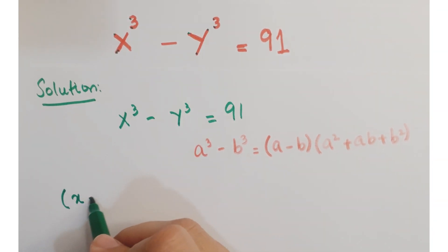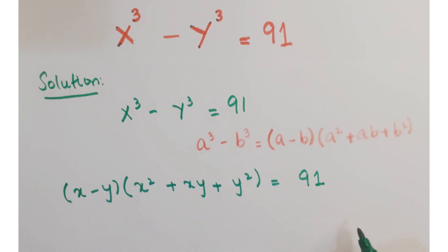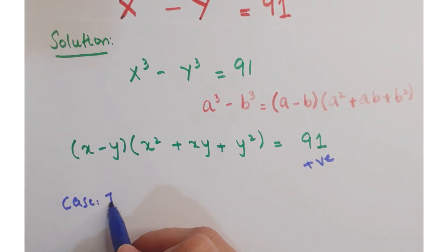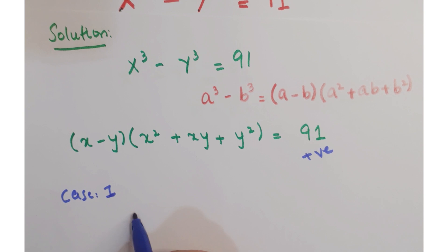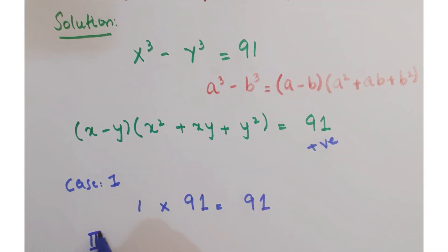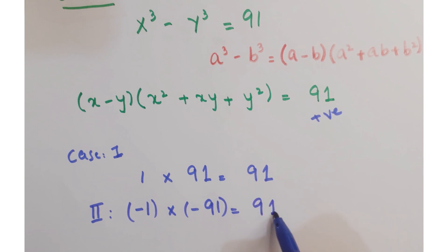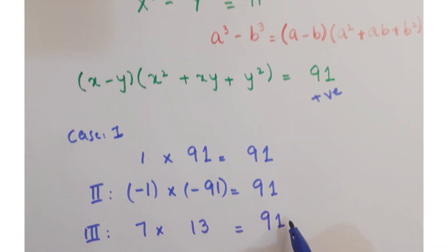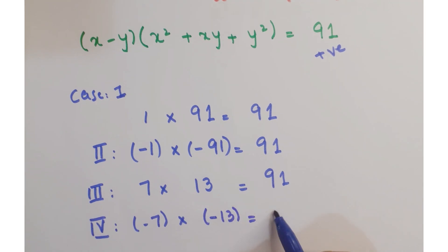We can write this as x minus y, times x squared plus xy plus y squared, equals 91. The product is a positive value, so we consider four cases: the product can be 1 times 91, or minus 1 times minus 91, or 7 times 13, or minus 7 times minus 13 — all of which make the product 91.